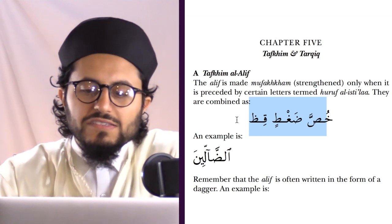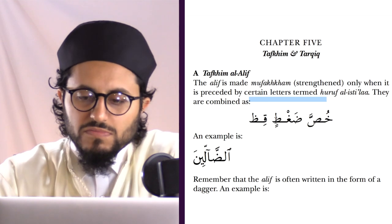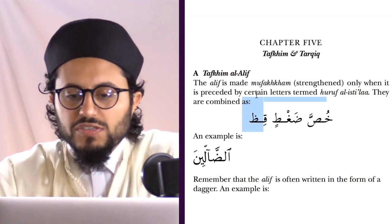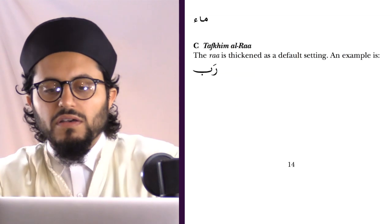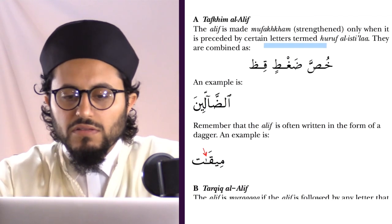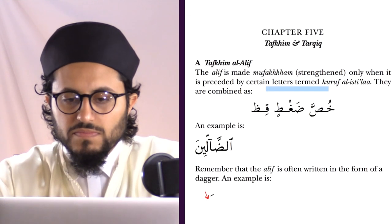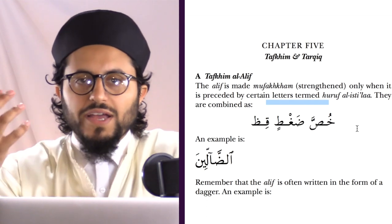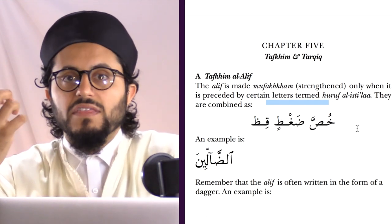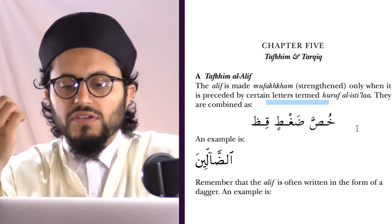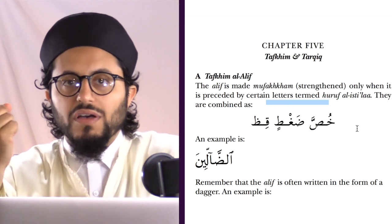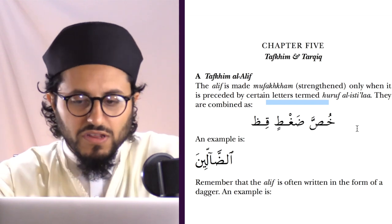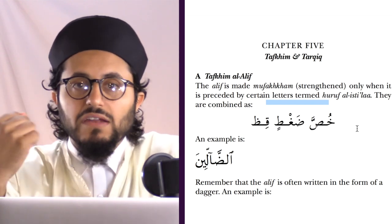So these are the letters — seven letters total — that when you pronounce them, they're fattened, thickened: Khah, Saad, Baad, Ghayn, Ta, Qaf, Da. We've talked about these a couple times already, so these are the fattened letters.